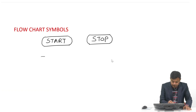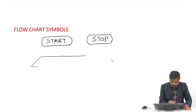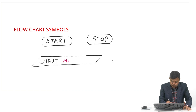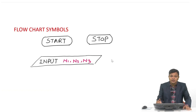Whenever the user supplies some values to the program, that is called input. We write 'Input' or 'Read' followed by a list of arguments — suppose n1, n2, n3. This means whenever this program gets executed, the user will supply three values: the first replaces n1, the second replaces n2, and the third replaces n3.